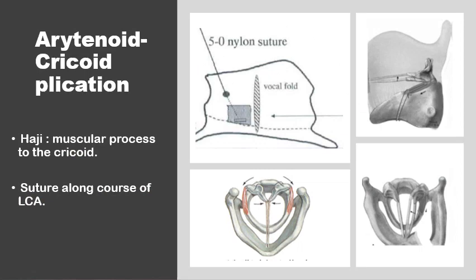In Isshiki's original description of the arytenoid rotation procedure, sutures around the lateral cricoarytenoid muscle were passed through the thyroid ala and fixed in position — essentially an arytenoid-thyroid plication. Haji later proposed a modification: pulling sutures around the muscular process of the arytenoid along the fibers of the lateral cricoarytenoid and securing them around the cricoid rather than the thyroid cartilage, suggesting this gives a more physiological adduction.